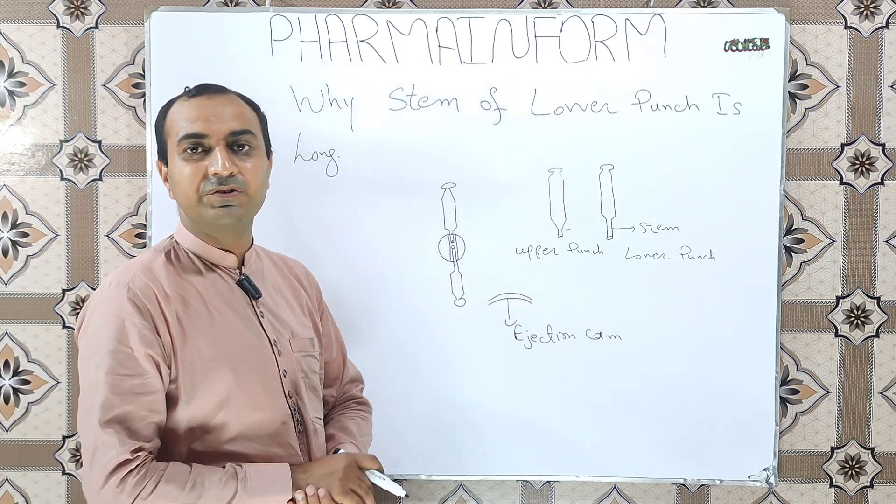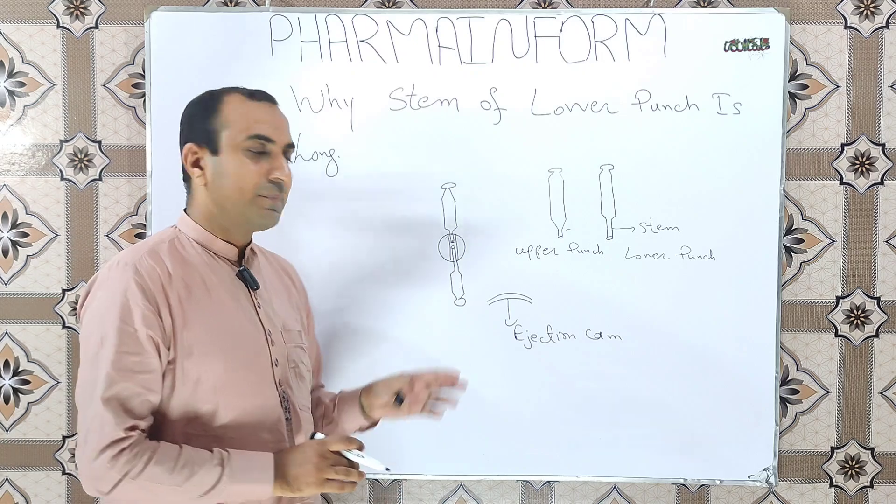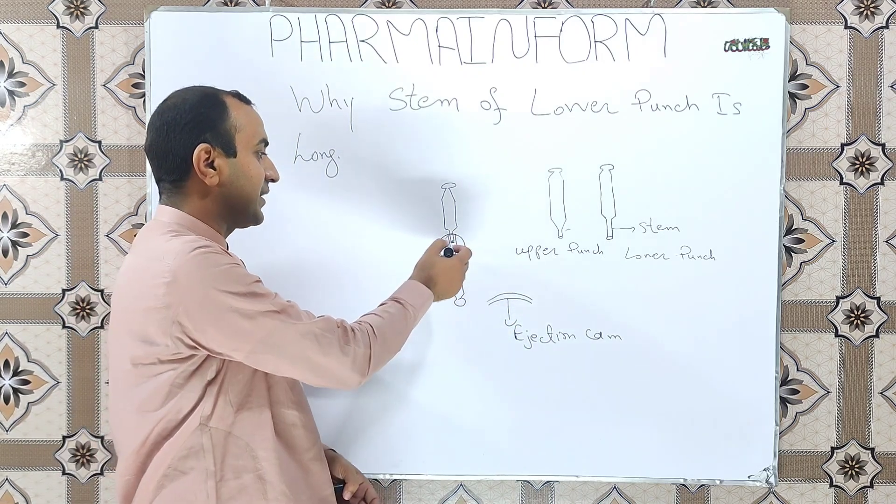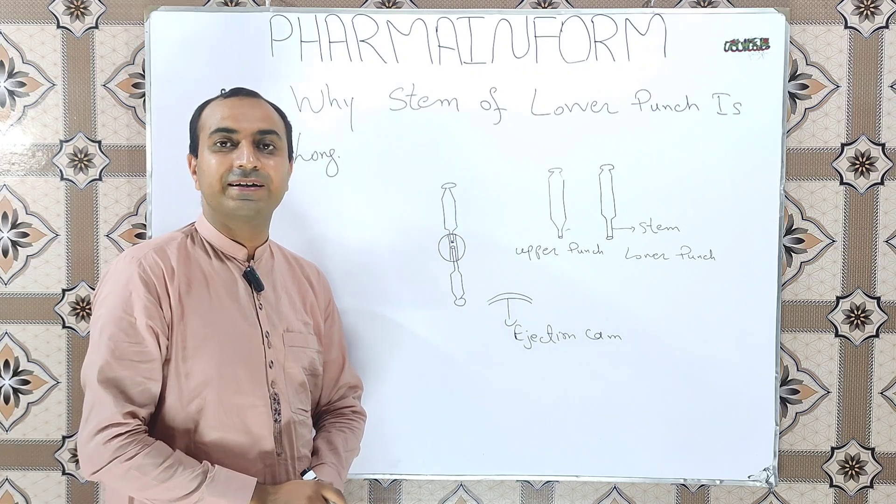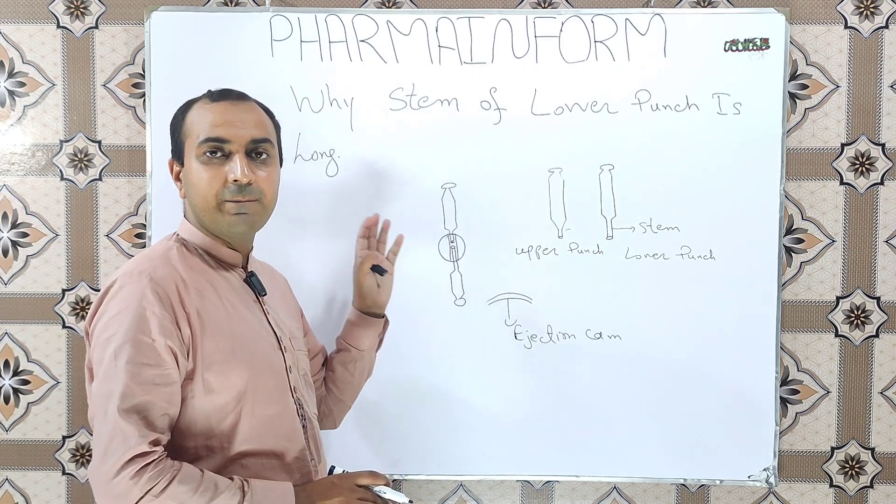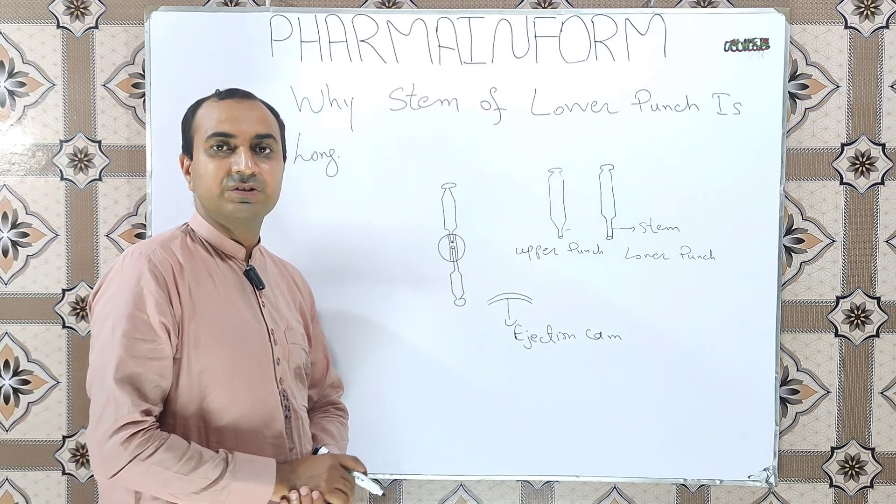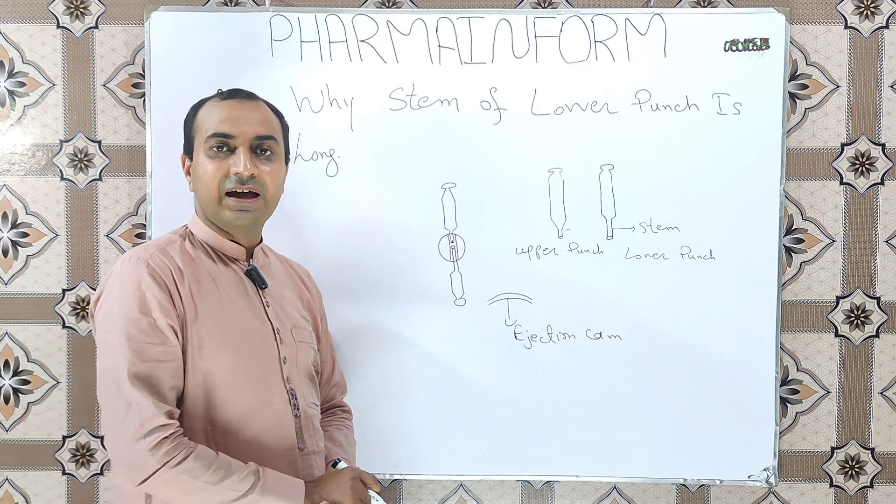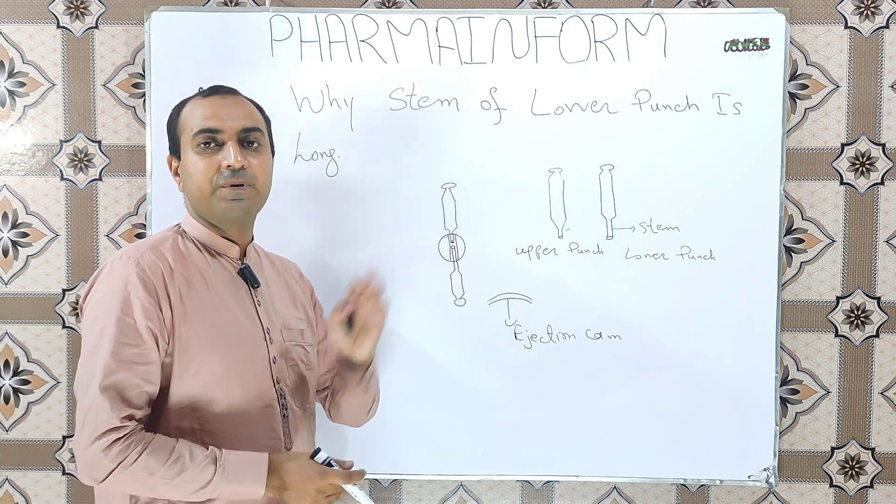The stem of lower punch is always long because when lower punch comes on the ejection cam, the stem is used to push the tablet out of the die cavity. This is the main reason for which the stem or tip of the lower punch is always larger than the upper punch.